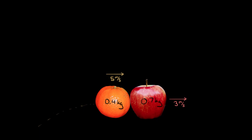One question we can ask: if three meters per second is the speed of the apple after the collision, what was the speed of the orange after the collision? What was the velocity of the orange — we'll call it VO — and which way was it going immediately after the collision? Sometimes this isn't so obvious.